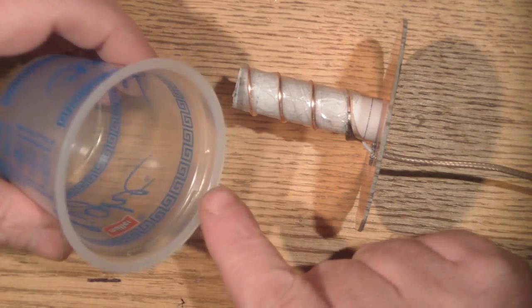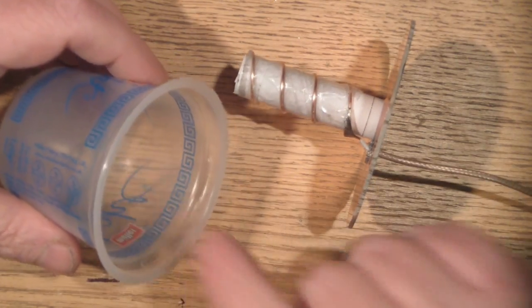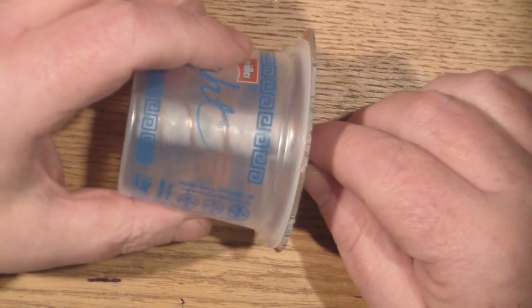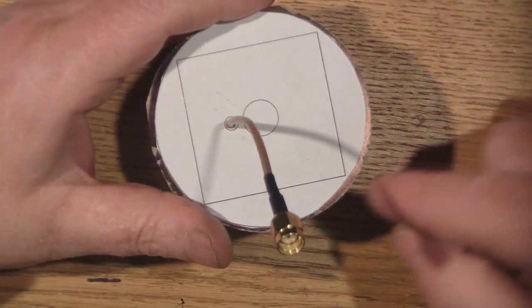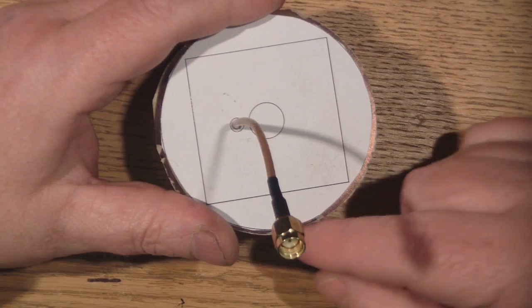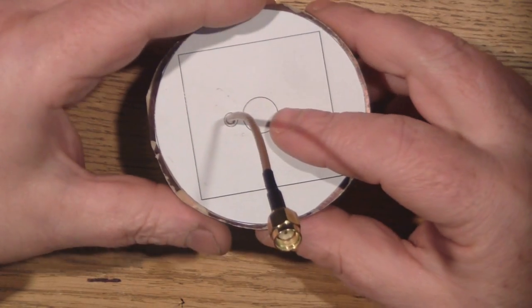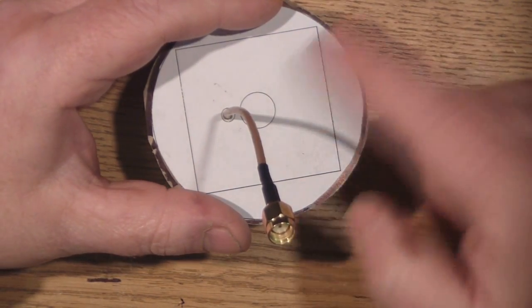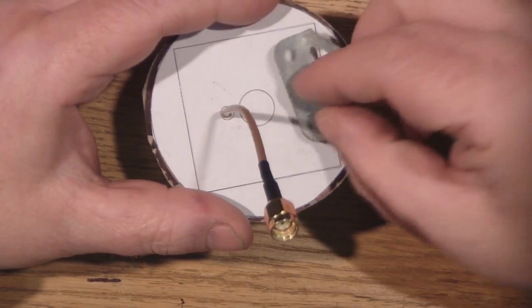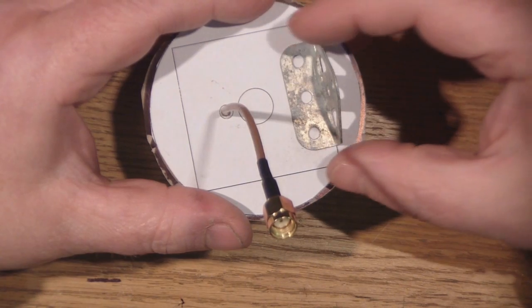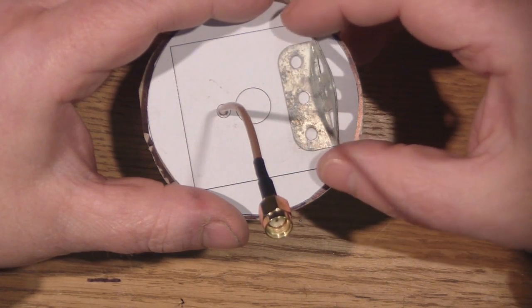So all that's left to do now is to put some epoxy around the rim of the yogurt pot and then attach the yogurt pot to the reflector. Then of course we've also got to tidy up the sides of our reflector. We've got to sand them down and get them nice and round. And also I'm going to be attaching a bracket so we can attach this antenna to a tripod.